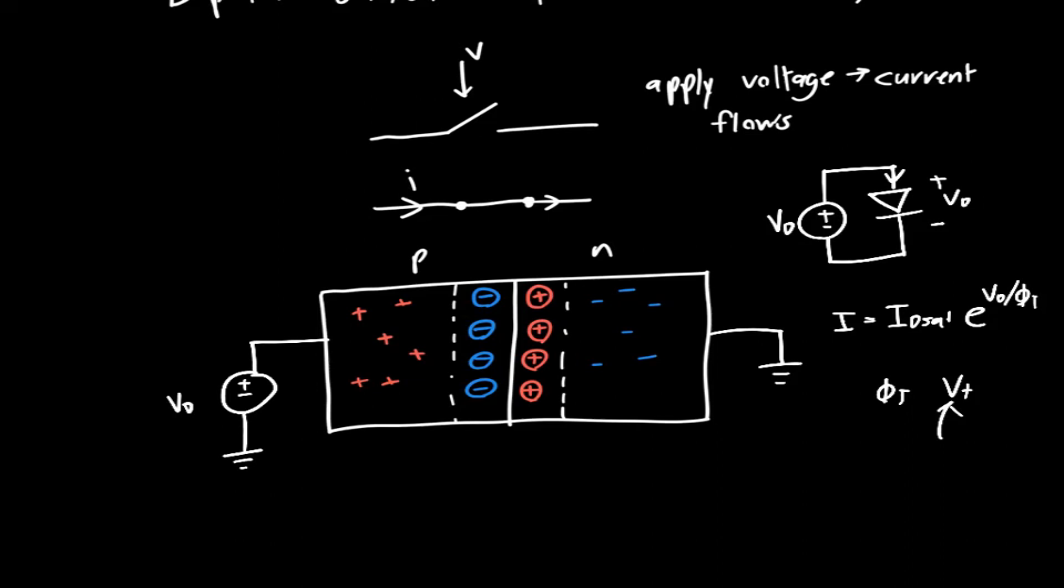So we know that once we have this PN junction and we apply a voltage, that some of these holes are going to be swept across from the P side to the N side. And that's going to result in a current flowing, current ID. And we know that some of these electrons are going to be swept back the other side, also resulting in an additional current, both of which are accounted for in ID.